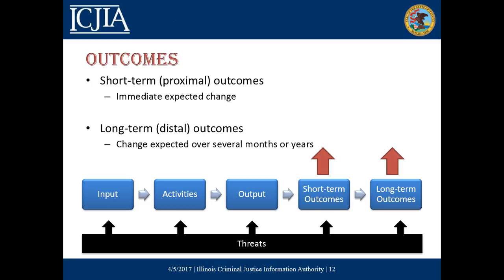Short and long-term outcomes are the expected changes that can happen. Short-term outcomes are those that are expected to occur immediately — within close proximity after you've completed the activities. Using our example of a training program, once you complete the training program, the short-term expectation might be that you have increased the knowledge of the individuals who have completed the program.